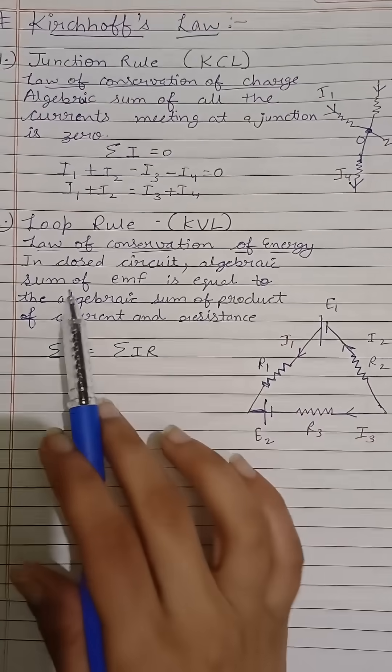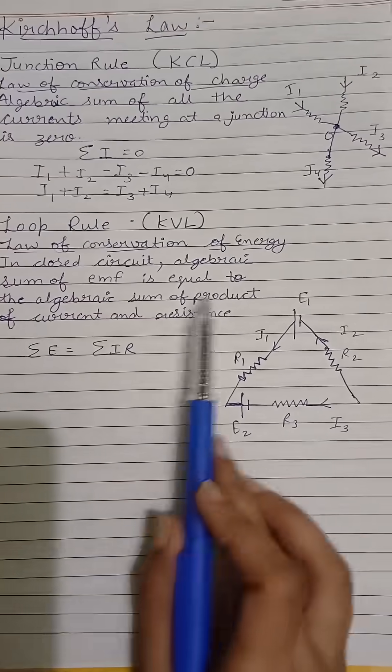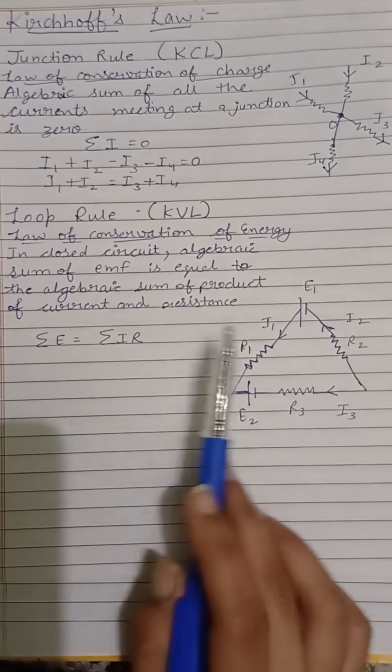In a closed circuit, the algebraic sum of EMF, that is the voltage we apply, equals the algebraic sum of the product of current and resistance.